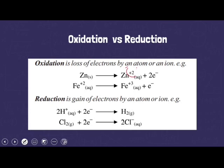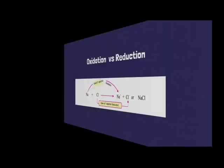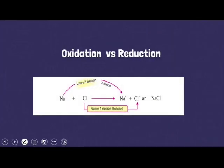Oxidation and reduction in this case can occur separately or simultaneously in one reaction, such as in the case of NaCl. As you studied in chapter four about ionic bond formation, sodium loses one electron from its outermost shell. The addition of that one electron into chlorine's last shell is called reduction, while the removal of one electron from sodium's last shell is called oxidation.